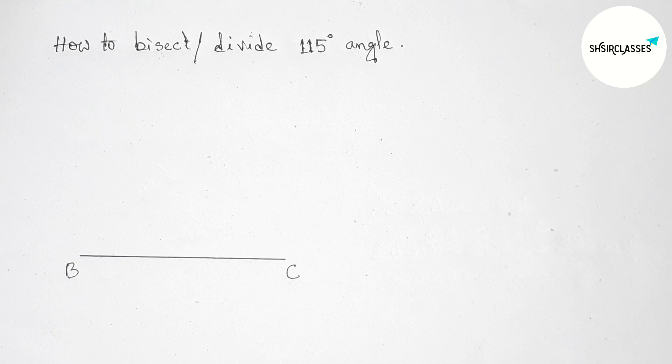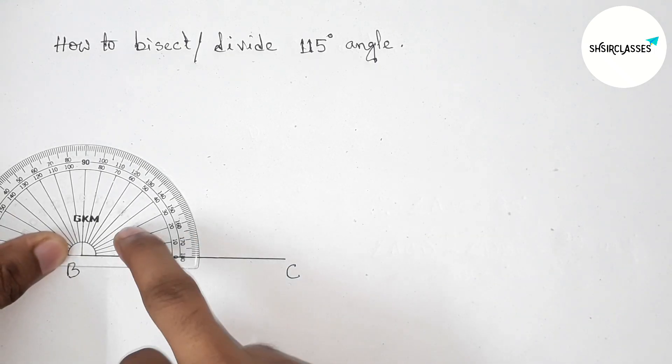Next, drawing angle on the point B. So putting the protractor on the point B first.